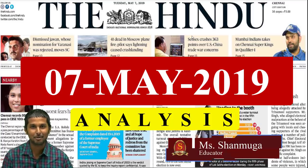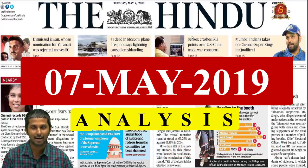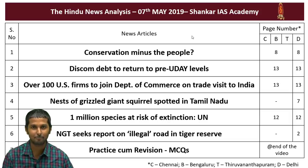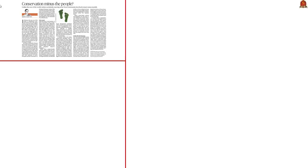Welcome to the Hindu News Analysis by Shankar IAS Academy for the date 7th of May 2019. Displayed are the list of news articles taken up for today's analysis along with the page numbers of Chennai, Bengaluru, Thiruvananthapuram and Delhi Editions. The handwritten notes in PDF format and the timestamping of news articles will be available in the description section and also in the comment section.